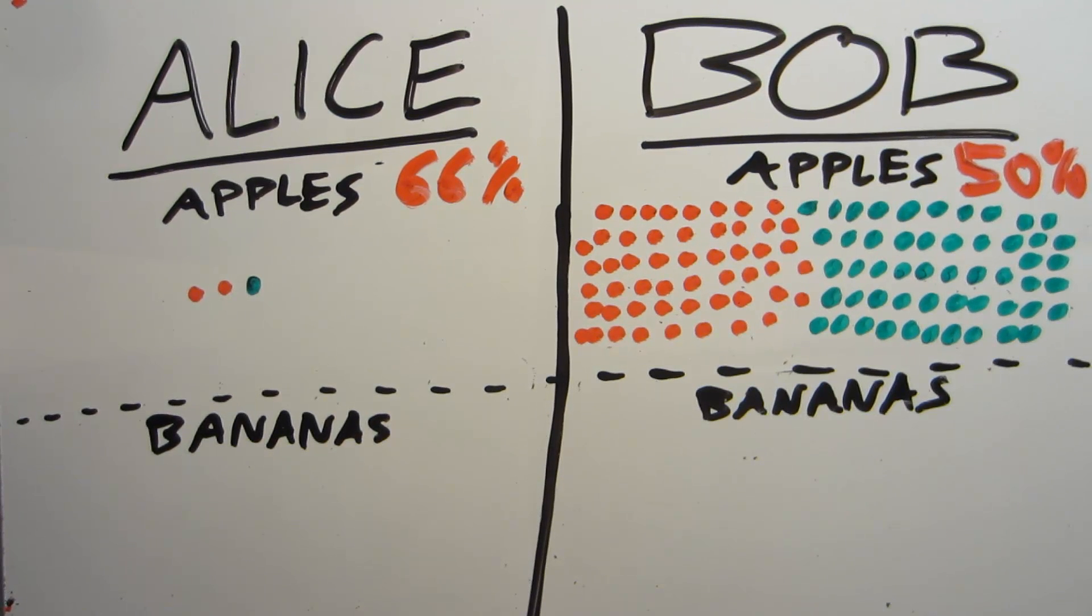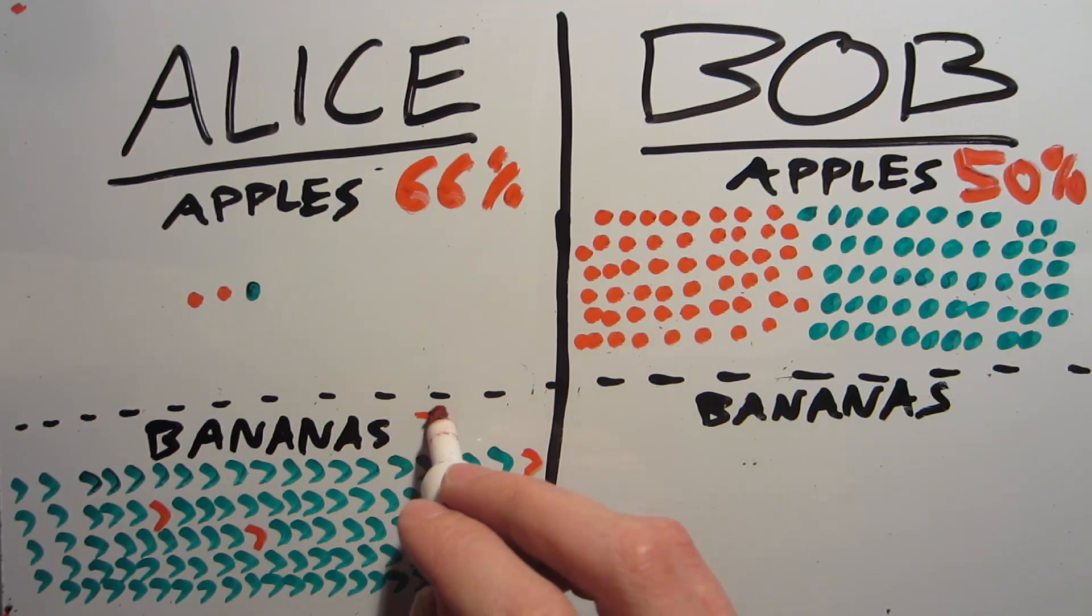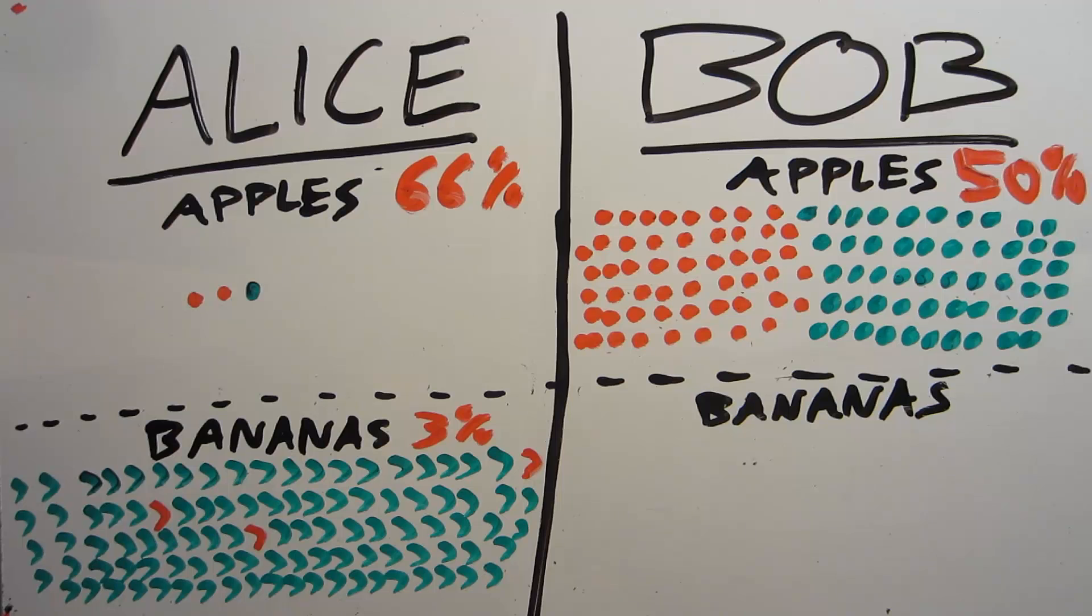Now Alice says, fine, I don't have the greatest apples, but I'm not really a bad apples anyways. I've got here 100 bananas, and of my 100 bananas, only three of them are bad. I only have a 3% bad banana rate. How can Bob possibly beat that?